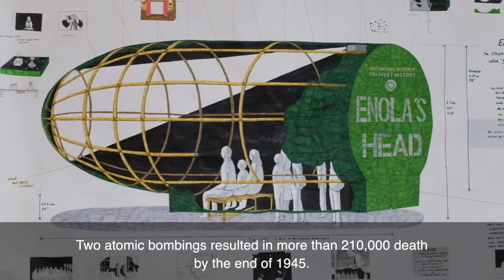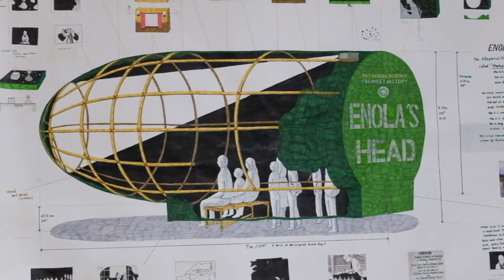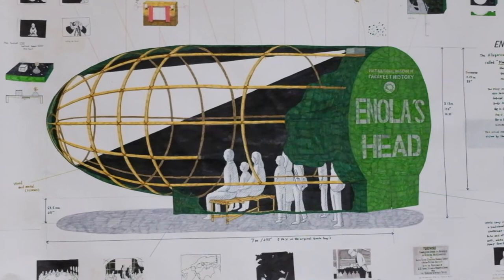In this theater, the viewers can watch video work that is based on the nuclear history from the World War II era to the current day. This theater is a full-scale nose of the Enola Gay that hangs from the ceiling and floats in the air. The viewers' legs appear out of the theater.